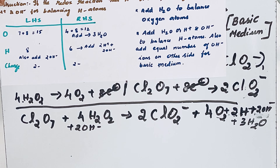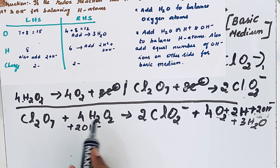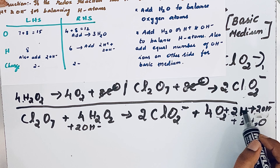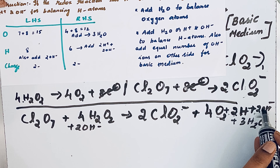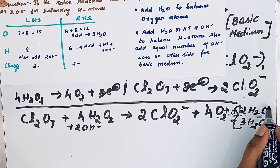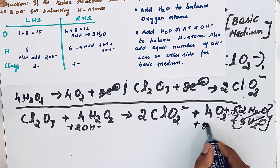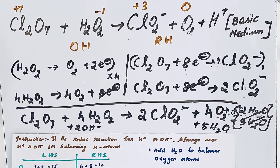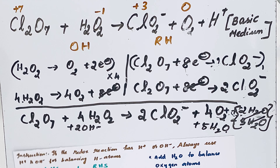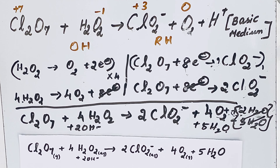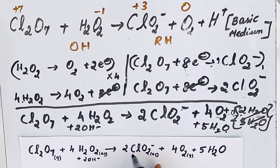The last step is checking the charge, which is essentially checking the answer. On the left side there is a 2- charge from 2OH⁻, and on the right side there is also a 2- charge — so charges are balanced. The 2H⁺ and 2OH⁻ combine to give 2H₂O, which together with the 3H₂O gives 5H₂O. The reaction is perfectly balanced. The complete balanced equation is: Cl₂O₇ + 4H₂O₂ → 2ClO₂⁻ + 4O₂ + 5H₂O. Thanks for watching.